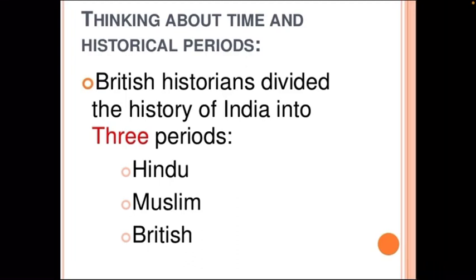Thinking about time and historical periods, the British divided Indian history into three periods: Hindu, Muslim, and British. But these are better known as ancient, medieval, and modern. In Class 6, you were taught about ancient history, which we have briefly reviewed. In this Class 7, we will continue with medieval history. And in Class 8, you will study modern history, which is referred to as the British period.